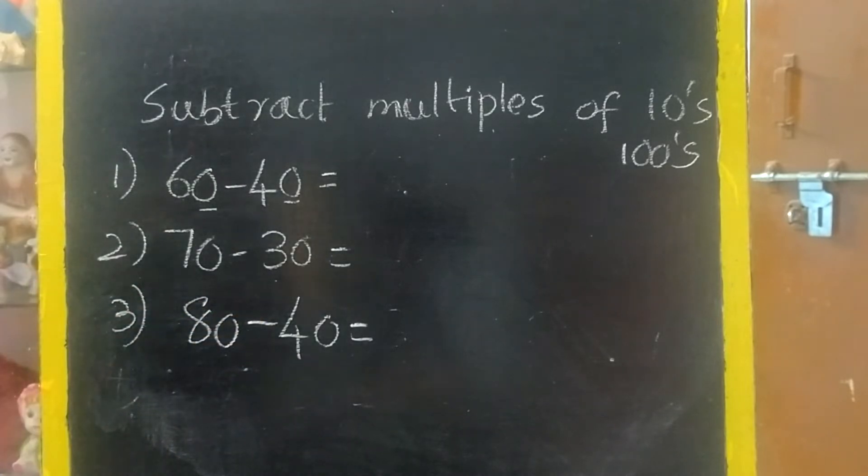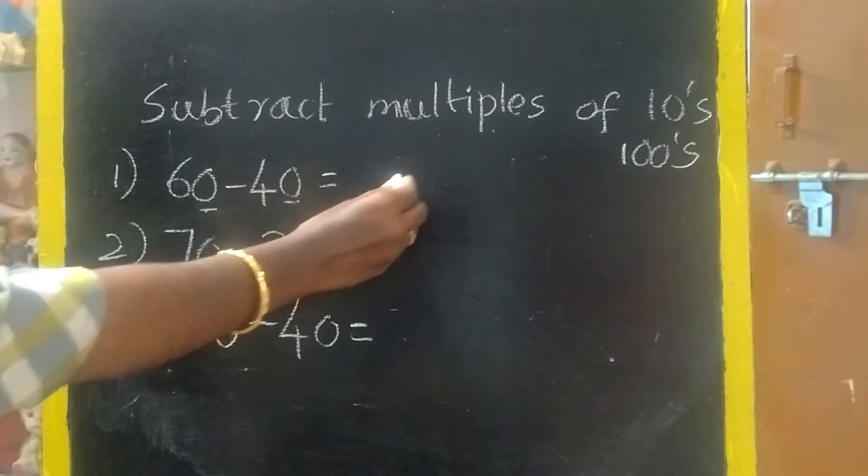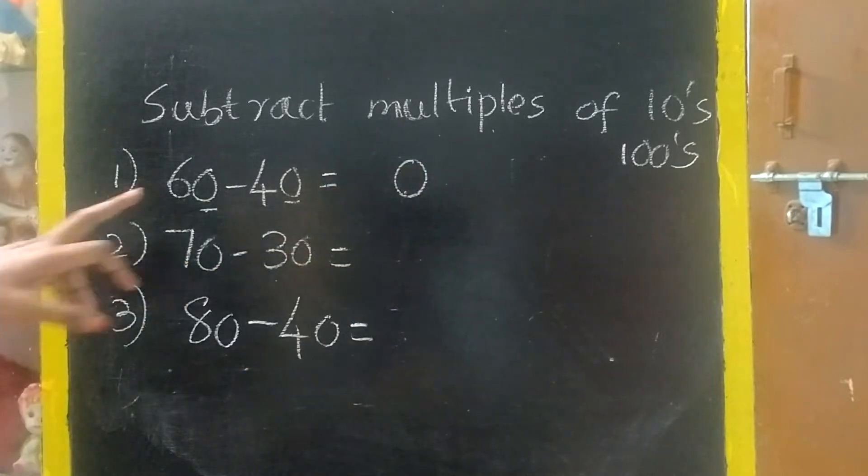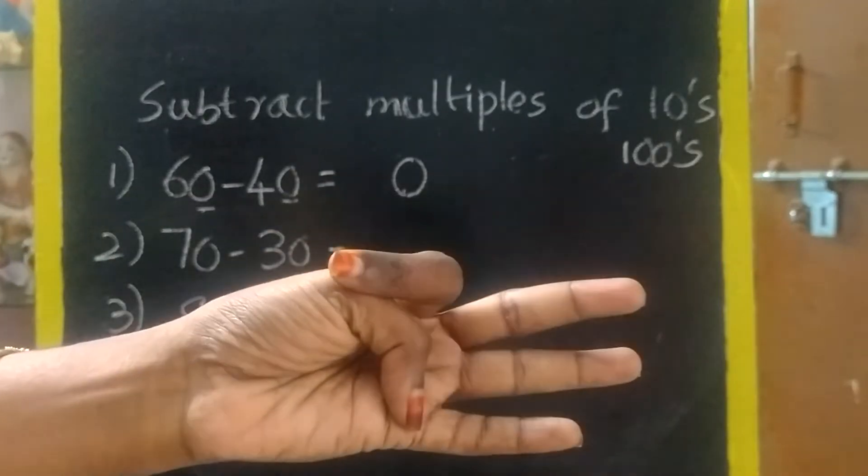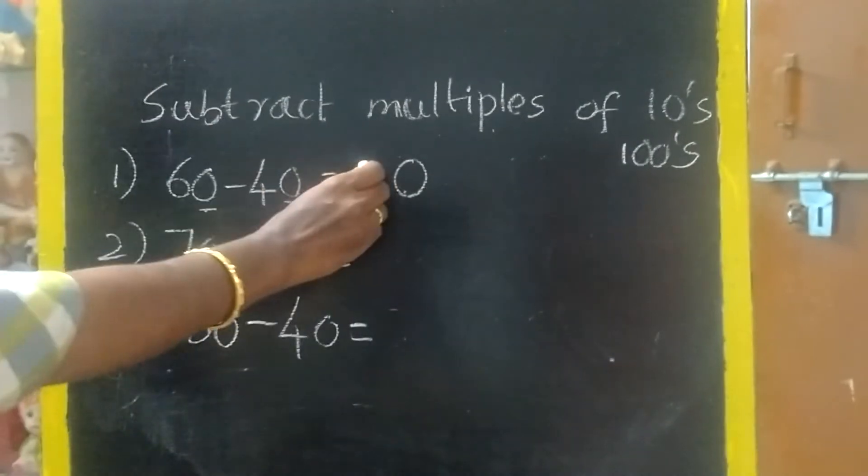So, first thing you have to subtract ones place. That is 0 minus 0, 0. 6 minus 4. Before 6: 5, 4, 3, 2. So, the answer is 20.